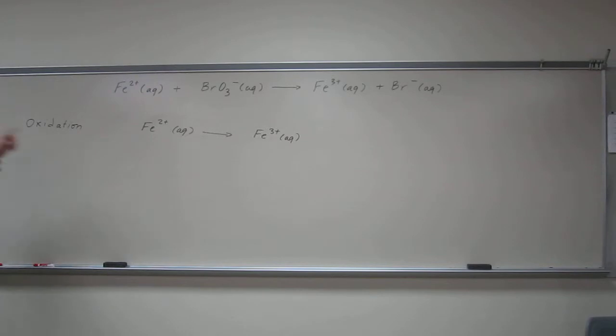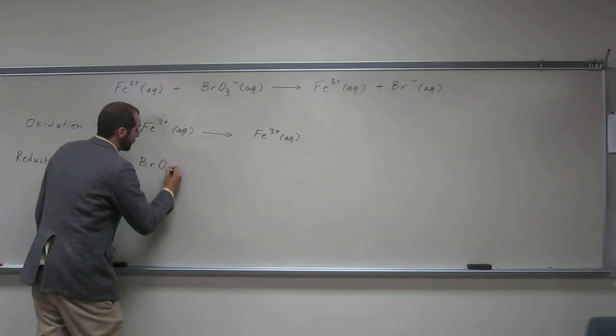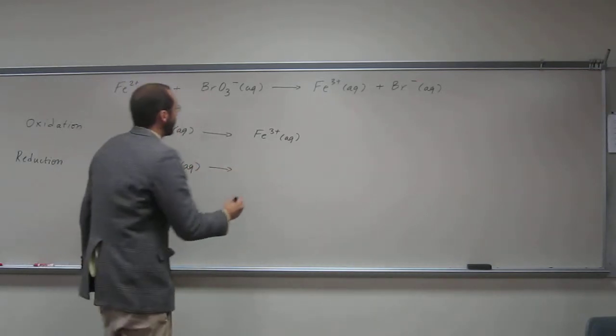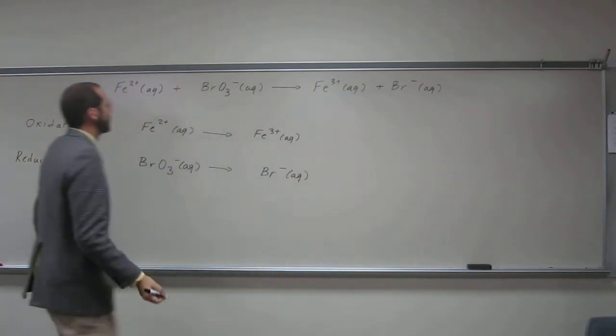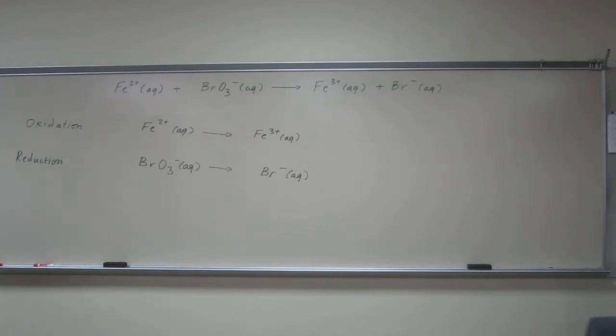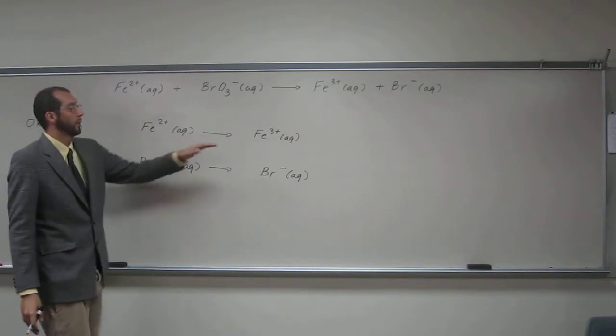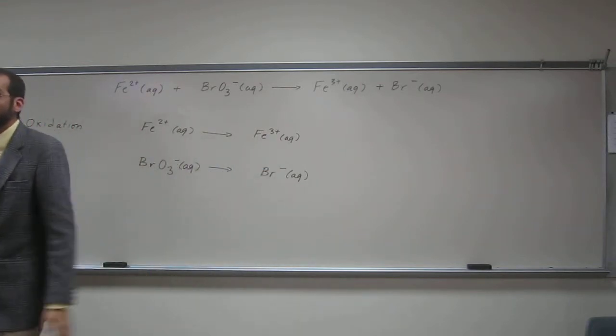You can see the oxidation number has changed there. Then the reduction is going to be BrO₃⁻ aqueous goes to Br⁻ aqueous. So if you recall from what we did last time, the next thing you want to do is make sure the number of atoms is balanced on both sides. We've got one iron and one iron there, so we're good there.